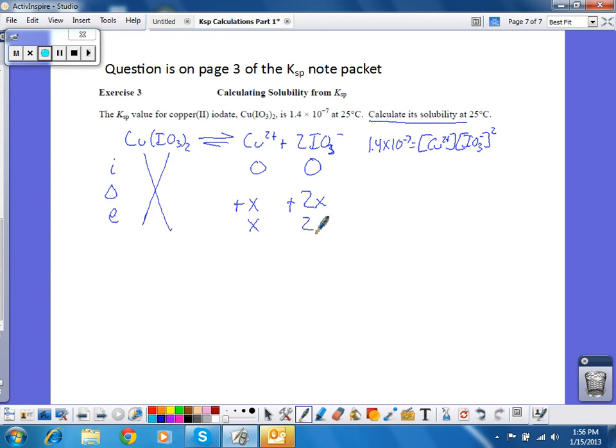So, now I take these numbers and plug them into the equilibrium expression. So, 1.4 times 10 to the negative seventh is equal to X times 2X squared. So, if I gather this together, 1.4 times 10 to the negative seventh equals 4, because 2 squared is 4, X cubed. Because I have to square this 2X term, so that is 4X squared times X is 4X cubed.